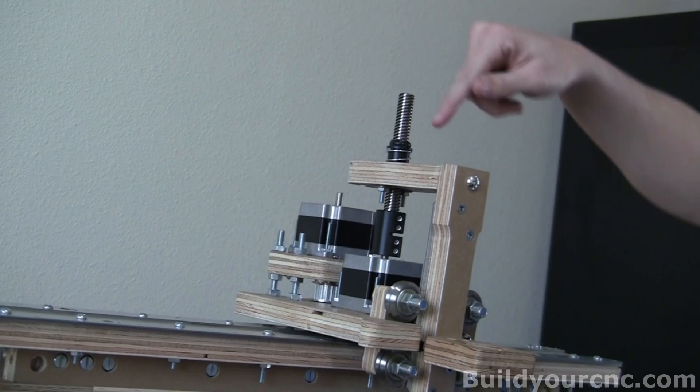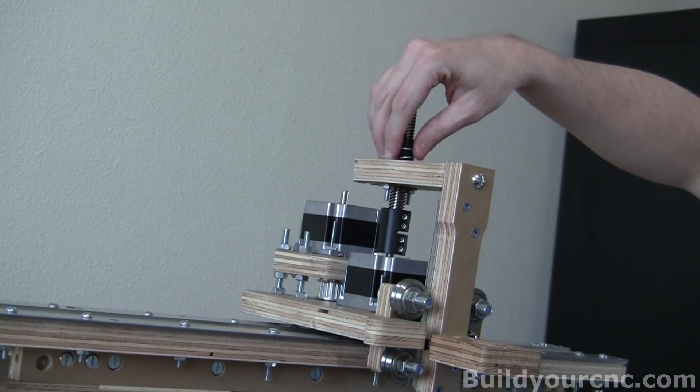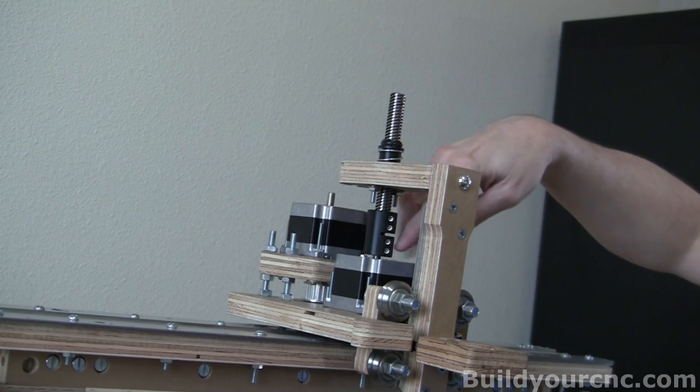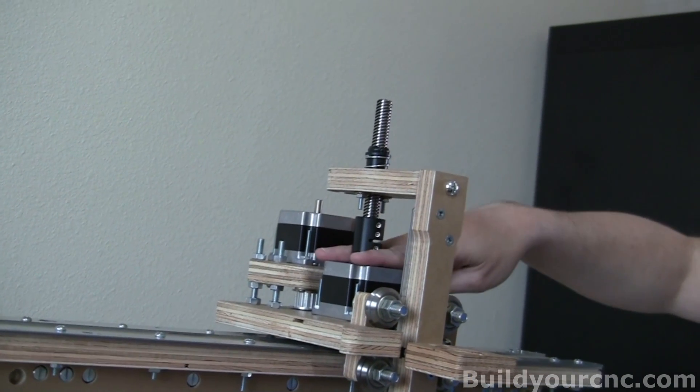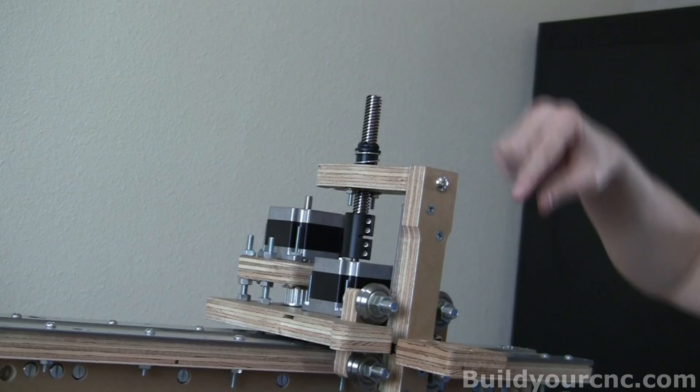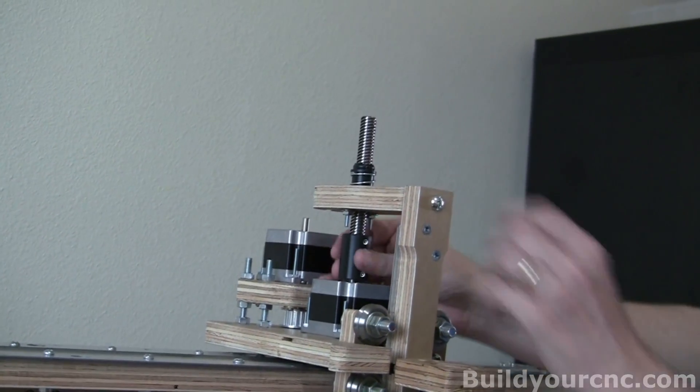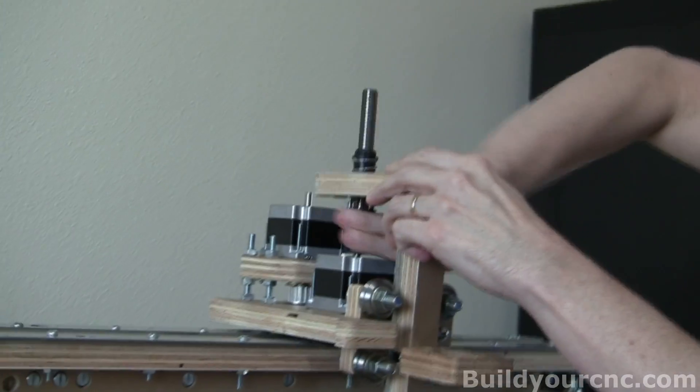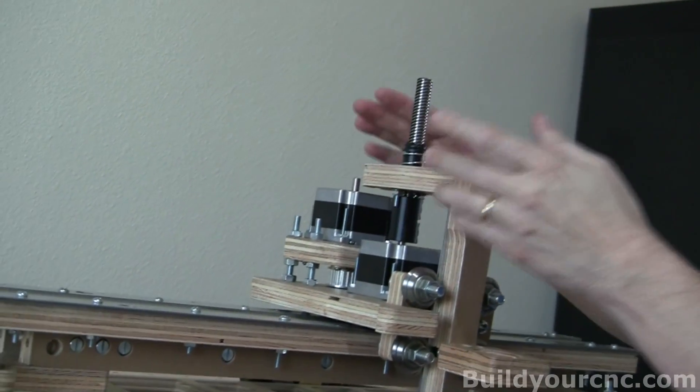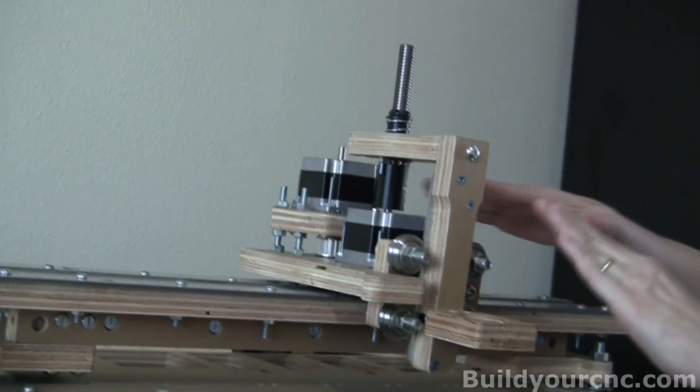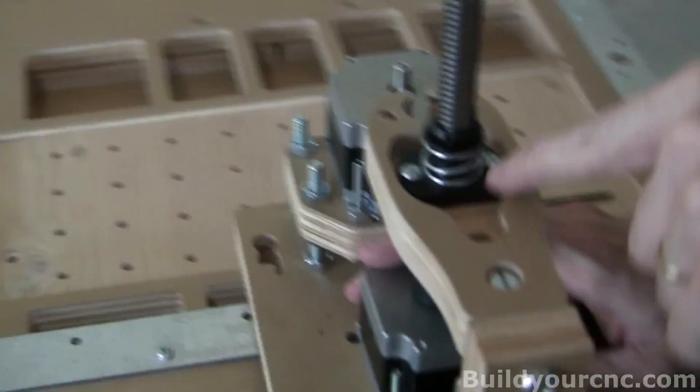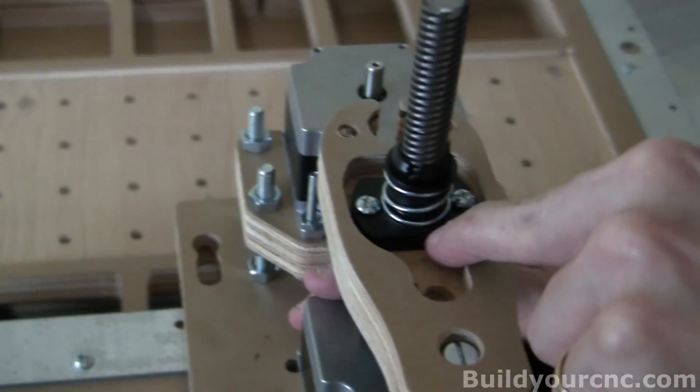We're going to bring it all the way down. We have two places of adjustments. The anti-backlash nut will move in this direction. And the actual motor will move in this direction. So you can make a perfect alignment. And then we're going to tighten everything down once we have the alignment correct. Okay, so we're going to bring it all the way down because this is the tightest area for alignment. Look on the top and make sure that the anti-backlash nut is essentially centered.